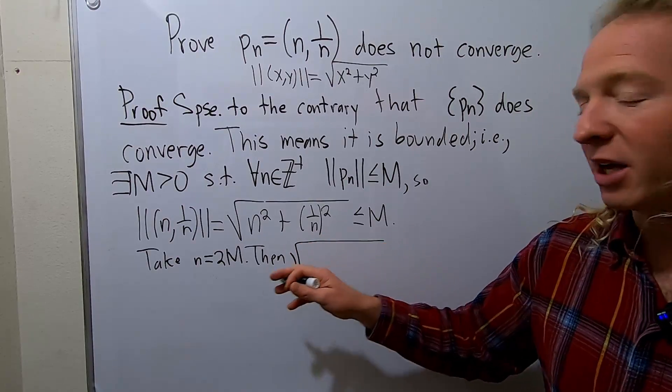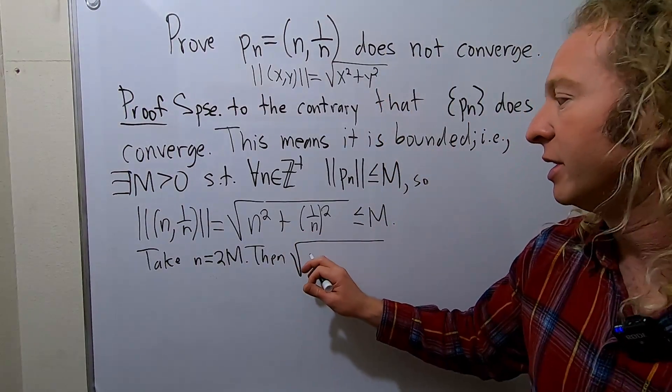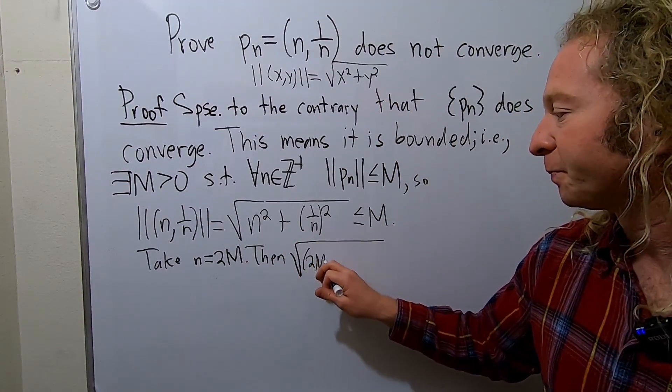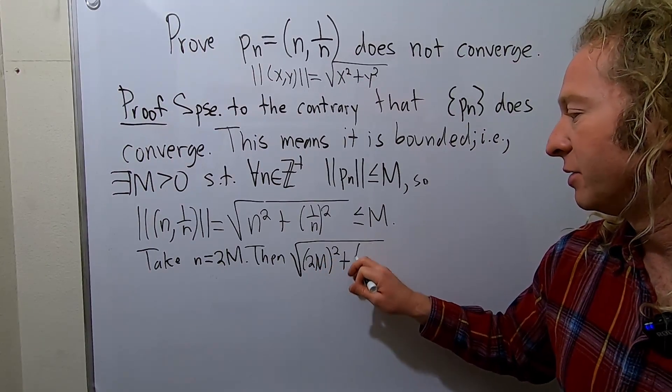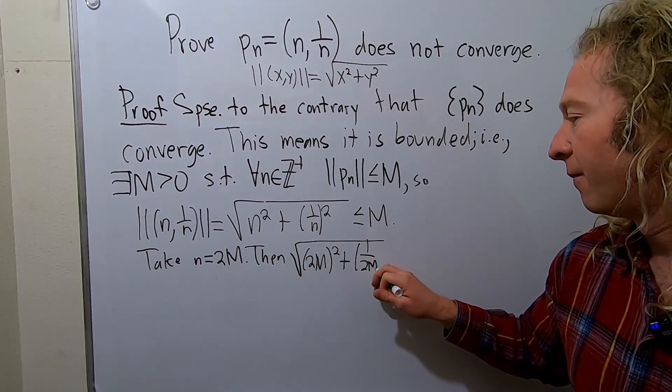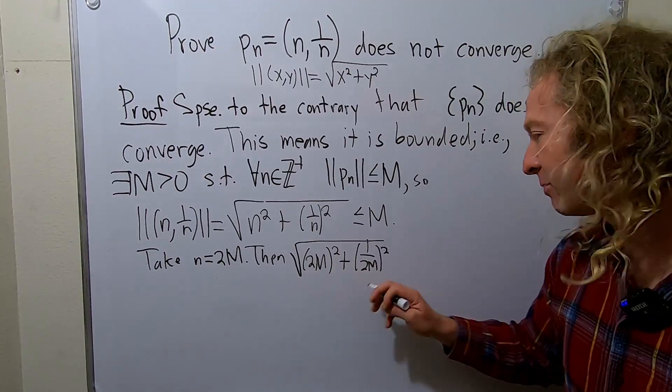This is the square root. And again, is this the best way to do it? I don't know. It's just how I did it. This is 2m plus, and then this is 1 over 2m. Okay, and then this is going to become 4m squared.